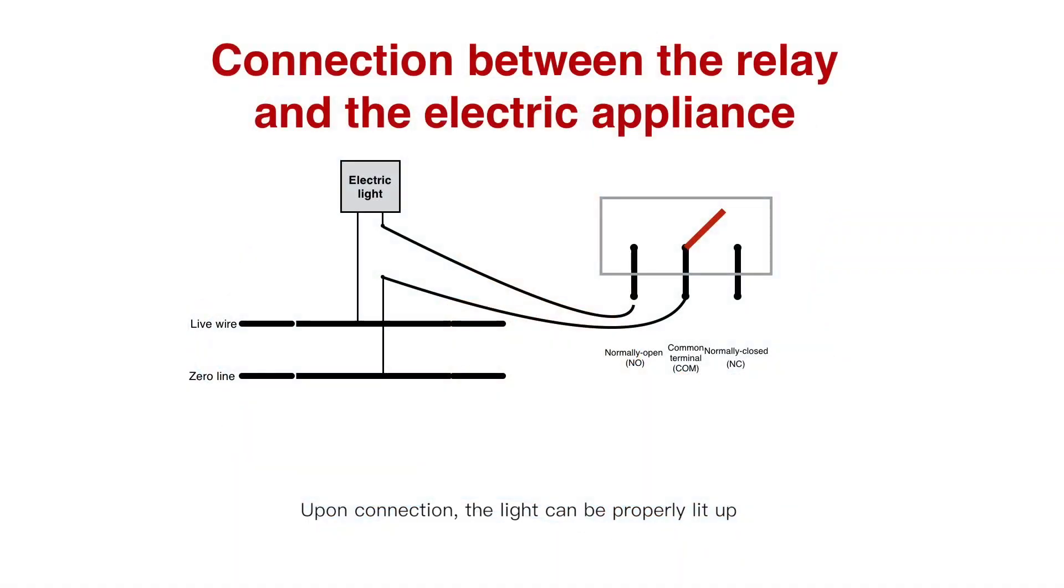Upon connection, the light can be properly lit up. When I control this relay to be under a released status, I will short-circuit the common terminal and the normally closed terminal, so the two light wires are disconnected and the light will be under a closed status.